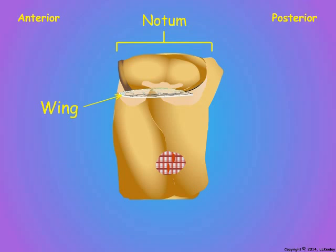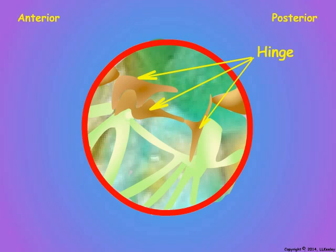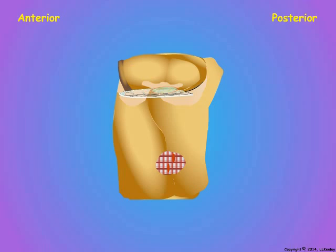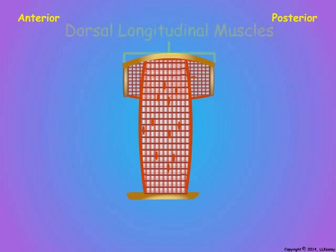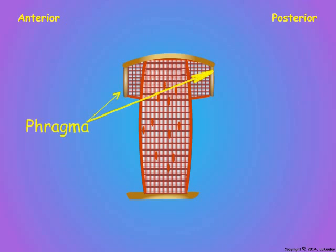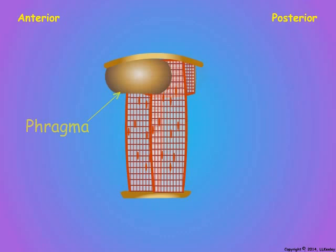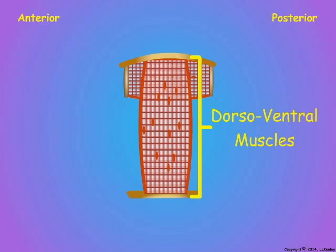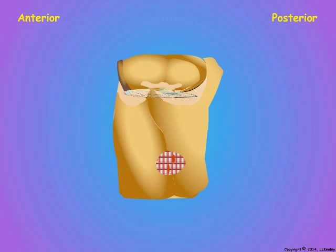The wings attach to the thorax in the membranous area between the notum and the pleuron. The wing dorsal and ventral cuticles are membranous and flexible at the points where they join the notum. Anterior and posterior nodal wing processes act as articulation points for the wing. Movements of the thorax for flight are transferred to the wing by three sclerites in the membranous area, which form a hinge between the nodal wing processes and the wing base. A pleural wing process also acts as a fulcrum point during wing movement.